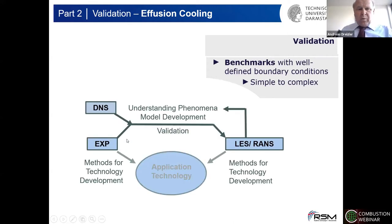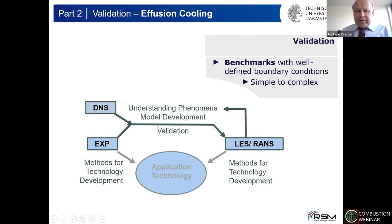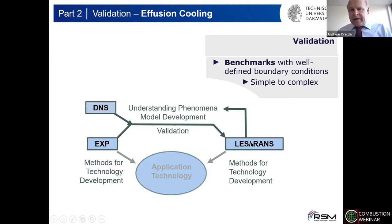Looking at how we use experiments not only to understand phenomena but also to support model development and validation of complete numerical simulations — at low Reynolds numbers DNS is also supportive, but for the case I'm going to show DNS has no chance. We are closely collaborating with people on scale-resolving simulations like LES, which is used to develop technology and improve understanding, triggering new ideas for experiments.